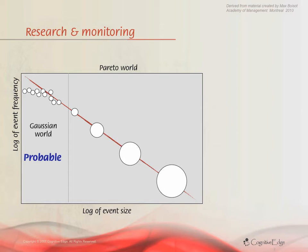As I move into the borderline between Gaussian and Pareto universes, I switch from probable to possible. There are a range of possible outcomes and it's difficult to assess them in terms of probability.